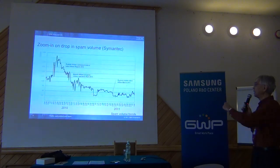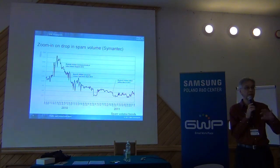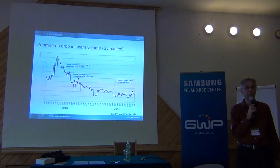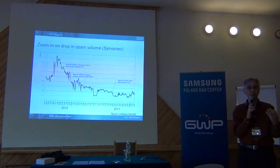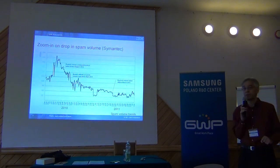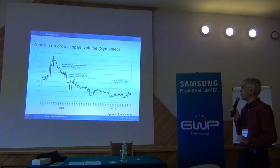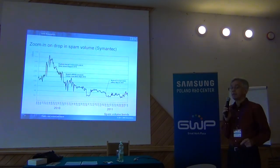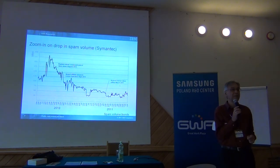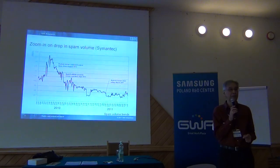There are three things that explain why the spam pattern dropped so much. First, people started taking down botnet command-and-control. Botnets are mostly infected PCs all over the world, but they're controlled from central places. If you can take down the control component, the whole botnet dies. Rustock was not the biggest botnet, but it was the first major takedown. In September, an affiliate program was taken down, which basically killed off a whole lot of spam.